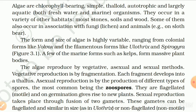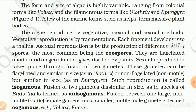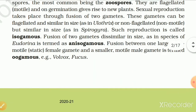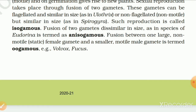A few marine forms such as kelps form massive plant bodies. The algae reproduce by vegetative, asexual and sexual methods. Vegetative reproduction is by fragmentation; each fragment develops into a thallus. Asexual reproduction is by production of different types of spores, the most common being the zoospore, which are flagellated, motile and on germination give rise to new plants. Sexual reproduction takes place through fusion of two gametes. These gametes can be flagellated and similar in size as in Ulothrix, or non-flagellated and non-motile but similar in size as in Spirogyra — called isogamous. Fusion of two gametes dissimilar in size as in a species of Eudorina is termed anisogamous. Fusion between one large non-motile female gamete and a smaller motile male gamete is termed oogamous, e.g. Volvox, Fucus.